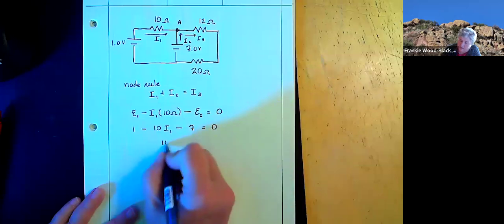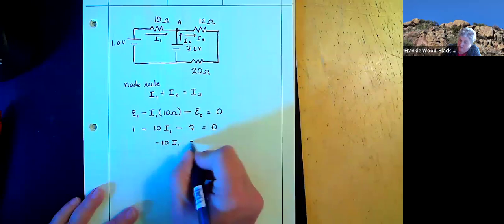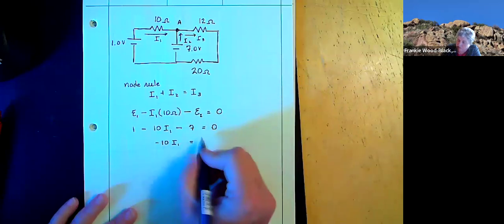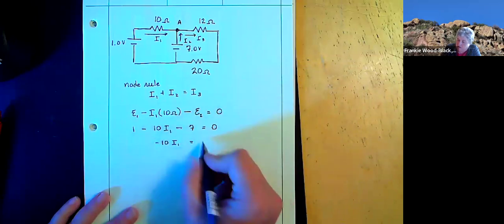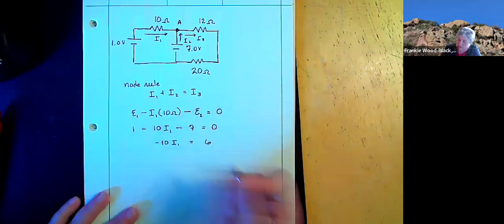So negative 10 I1 is equal to, I get minus 6 over here. So I get positive 6 there. I get I1 is equal to negative 0.6.